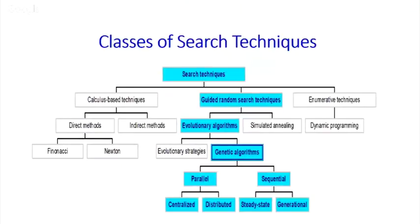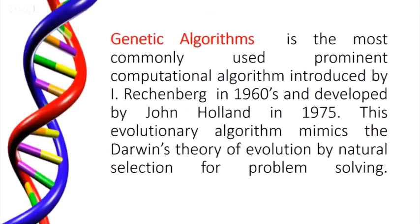Now we move to search techniques. Generally, you have calculus-based techniques, guided random search techniques, and enumerative techniques. In the guided search category, evolutionary algorithms are there, and genetic algorithm falls under that. Genetic algorithm is a commonly used, prominent computational algorithm introduced by Ira Shinberg in 1960, and John Holland in 1975 modified it and took it into practical applications.